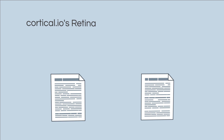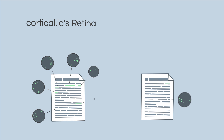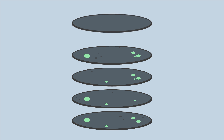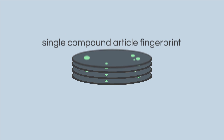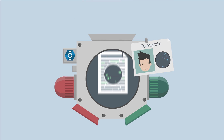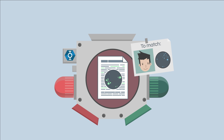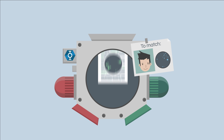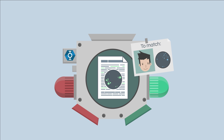Applied to the news feed subscribed to by Michael, the Cortical.io technology will generate the fingerprints of every word contained in every single article, merge them into a single compound fingerprint for each article, and compare every article fingerprint with a filter fingerprint representing Michael's interests.